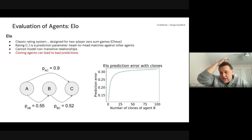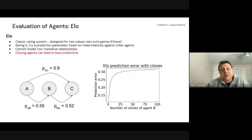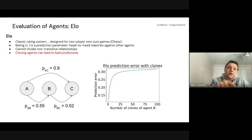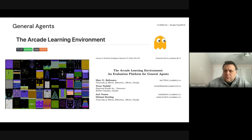Here's another problem, even with transitive relationships. Suppose you have three agents: A beats B 55% of the time, B beats C 52% of the time, and A beats C 90% of the time. If you just increase the number of B agents in the population while keeping these probabilities the same, it becomes harder and harder to predict that 90% probability between A and C, because ELO spends a lot of effort fitting the A-B and B-C relationships.